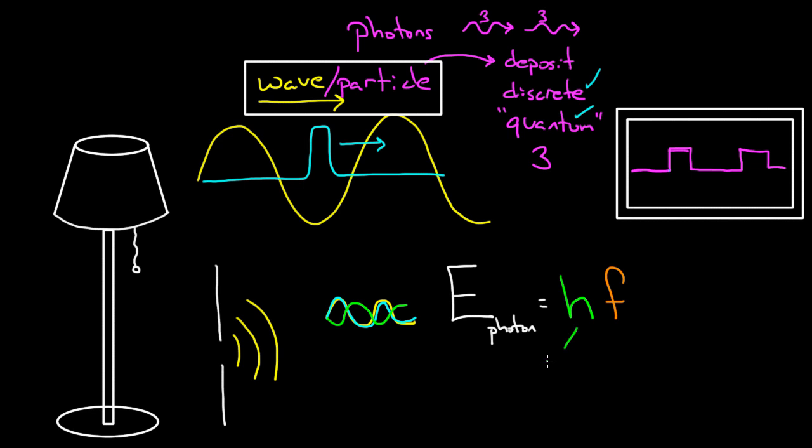What is Planck's constant? Well, Planck was basically the father of quantum mechanics. Planck was the first one to figure out what this constant was and to propose that light can only deposit its energy in discrete amounts.